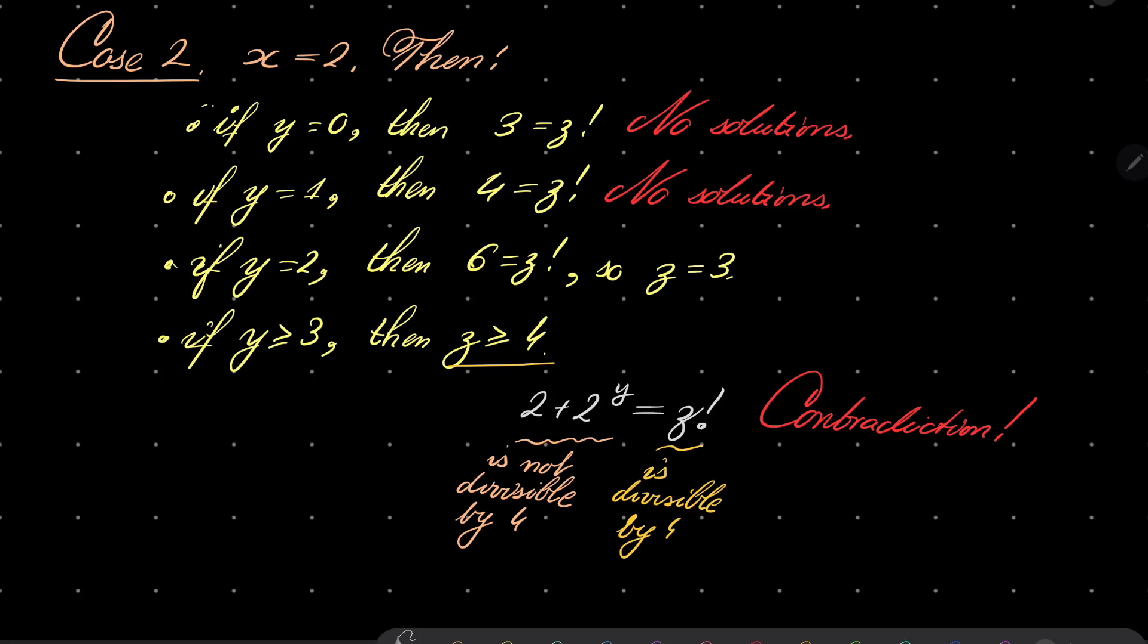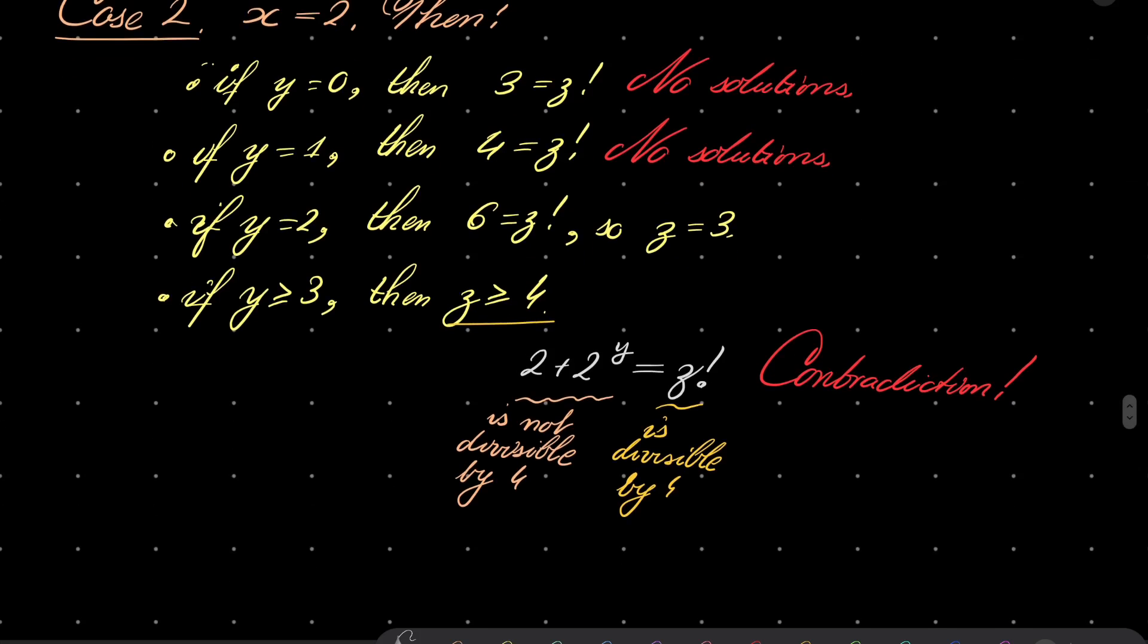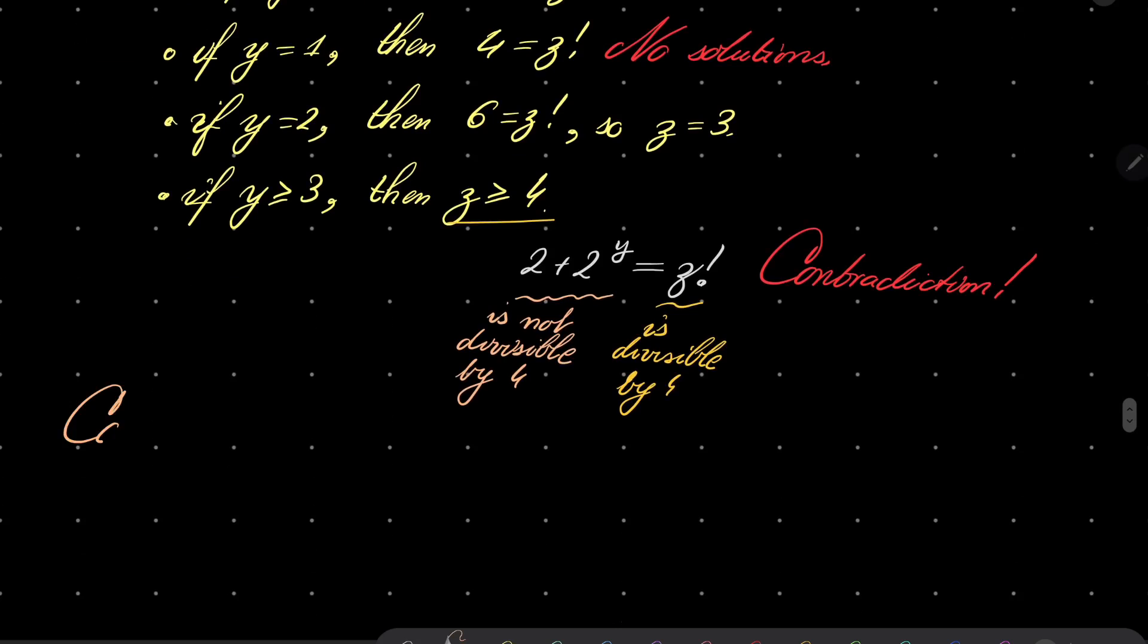Alright, so we have considered cases of x, now let's consider cases of z. In case number 3, z is either 0 or 1, then we have this equation: x factorial plus 2 to the power of y equals 1, and again, no solutions, because this is greater than or equal to 1, and this is greater than or equal to 1.